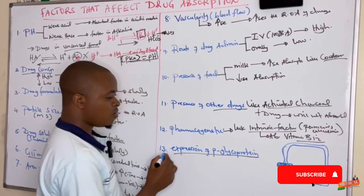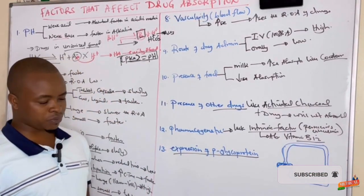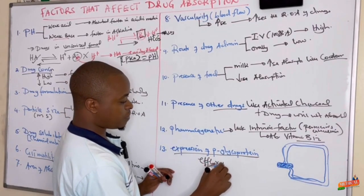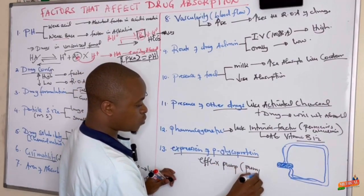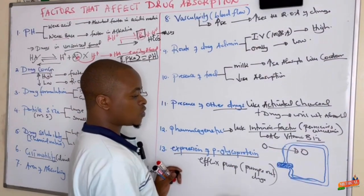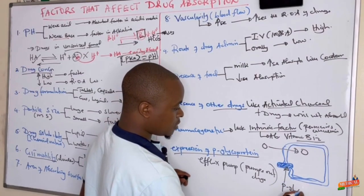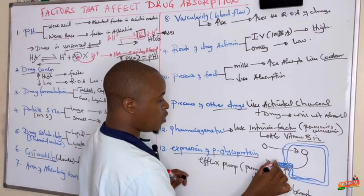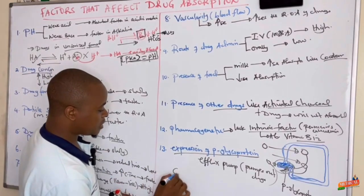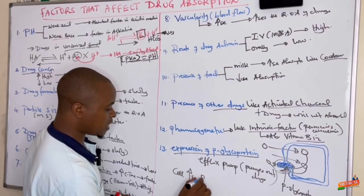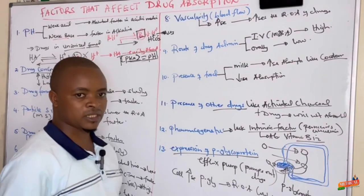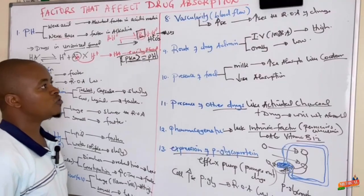Finally, the expression of P-glycoprotein affects drug absorption. P-glycoprotein is the efflux pump of the drug — it pumps drugs out of the cell. Whenever a drug is absorbed into the cell, P-glycoprotein pumps it back out. Cells that have increased levels of P-glycoprotein therefore have a low rate of net drug absorption, even though the drug enters, because it is pumped out immediately.